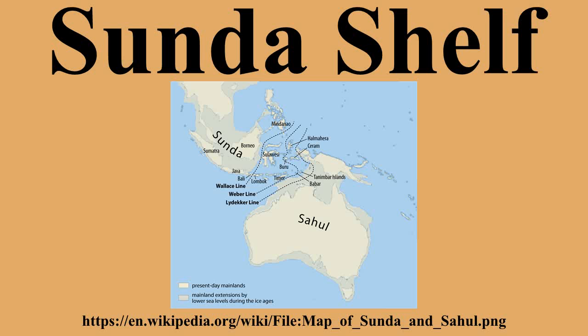Geologically, the Sunda Shelf is a southeast extension of the continental shelf of Southeast Asia. Major land masses on the shelf include the Malay Peninsula, Sumatra, Borneo, Java, Madura, Bali and the surrounding smaller islands. It covers an area of approximately 1.85 million square kilometers.